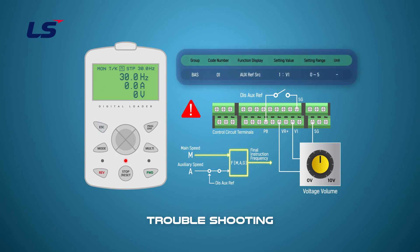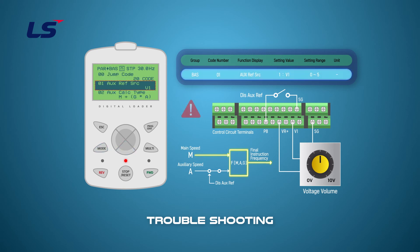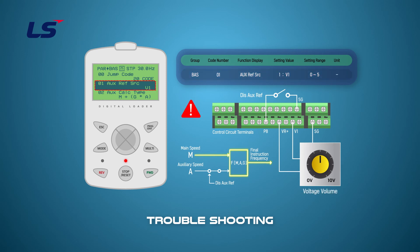If the input status of the multifunction input terminal block with the disaux reference function set is displayed as off, check the input value of the auxiliary speed. Check which input signal is set in BAS1, and check if it is the same as the signal currently being entered. If correct, check whether the value is correctly supplied to the inverter, and check the wiring status of the volume resistance and inverter.